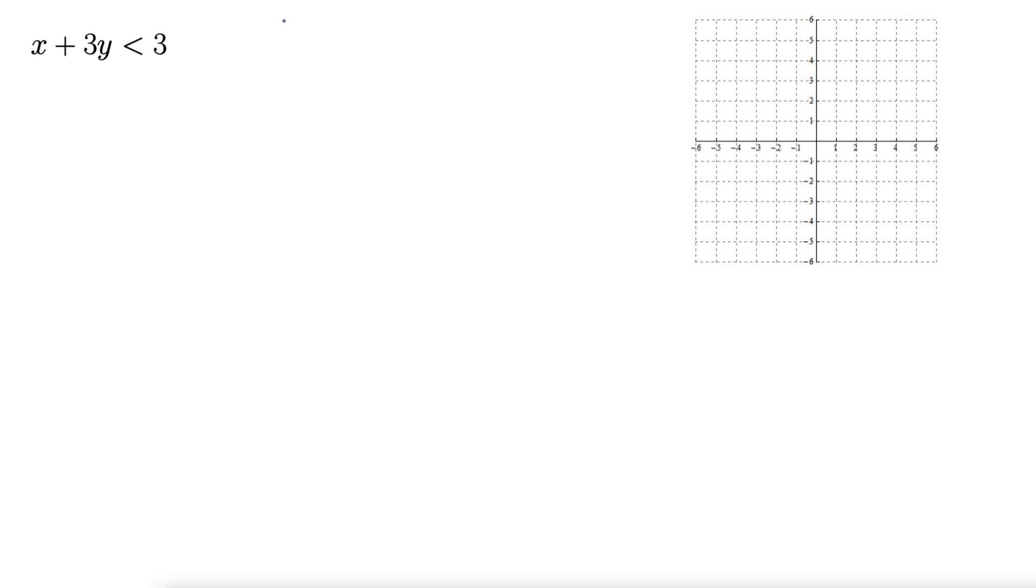Let's get it into y equals mx plus b form, where m is the slope, b is the y-intercept. Because it's less than, we are going to shade down. Less than is shade down, greater than is shade up.